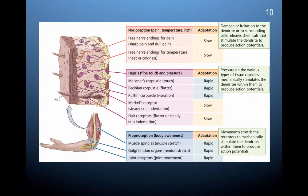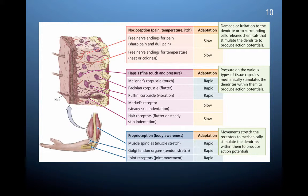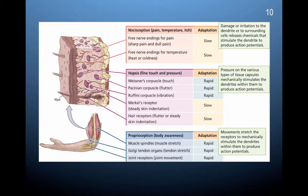Hapsis covers fine touch and pressure. The receptor types include Meissner's corpuscle, Pacinian corpuscle, and Ruffini corpuscle — corresponding to touch, flutter, and vibration — as well as Merkel's receptor for steady skin indentation, and hair receptors responding to flutter or steady skin indentation. The adaptation of these receptors is both rapid and slow, and having this combination is very important.